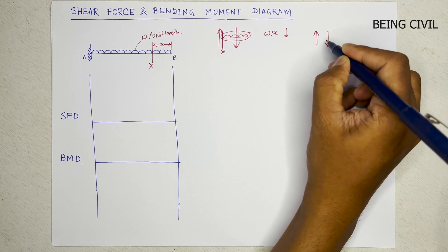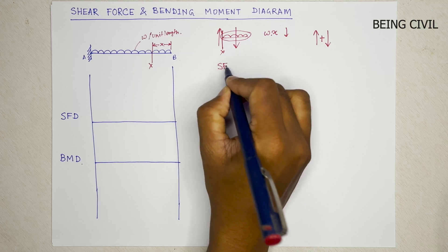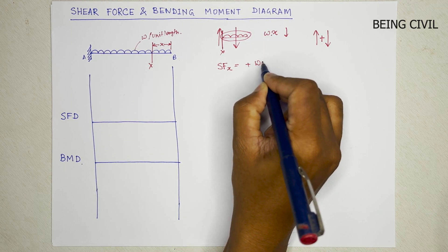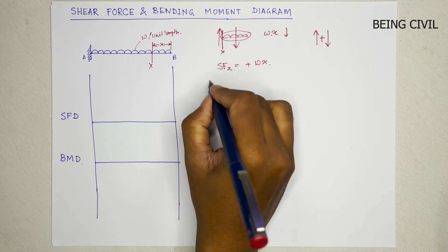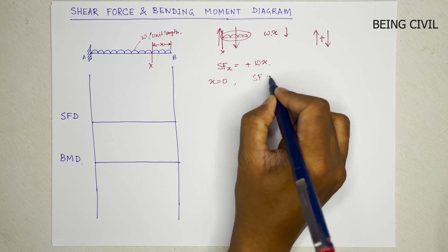So it is positive. The shear force at x is equal to plus w into x. So at x equal to zero, that is the free end, shear force will be zero.